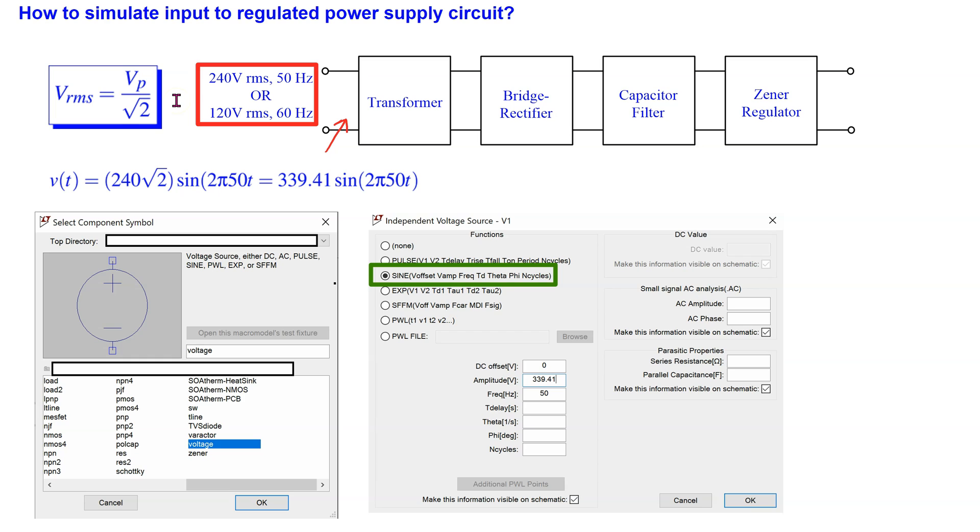For a sinusoid, the RMS value is related to the peak value by this relationship shown here. For 240V RMS, the peak value is 339.41 V, which is set here.